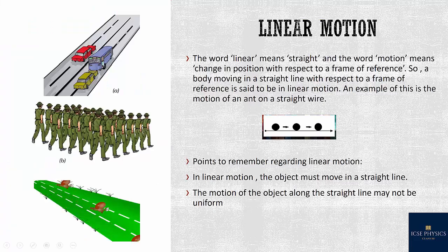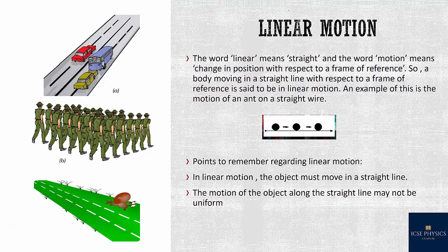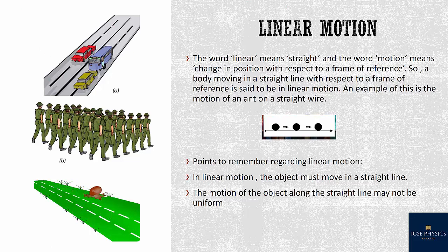What is linear motion? The word 'linear' means straight and the word 'motion' means change in position with respect to a frame of reference. Let's see this example — as you can see here, this is a road and the car is moving on the road.